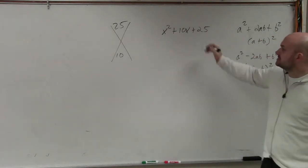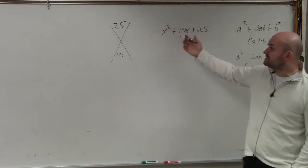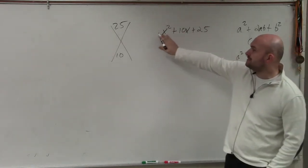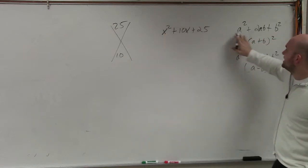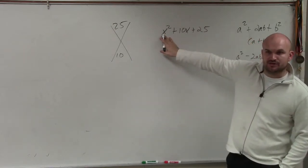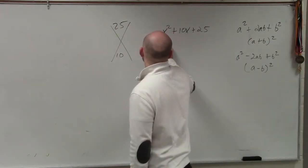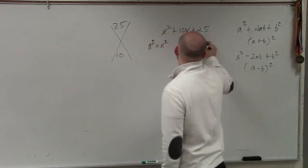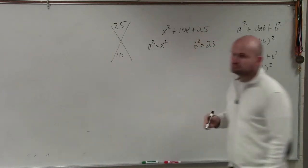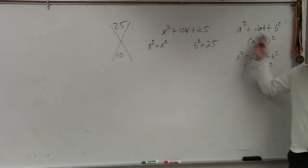But what's nice about this is sometimes it might be even a little bit more difficult if we have square terms. But what we want to do is, is a² and x²? Is that a squared term? So basically, what you do is you say, a² is equal to x². b² is equal to 25. Does everybody agree with me? I'm trying to make a relationship between these two.